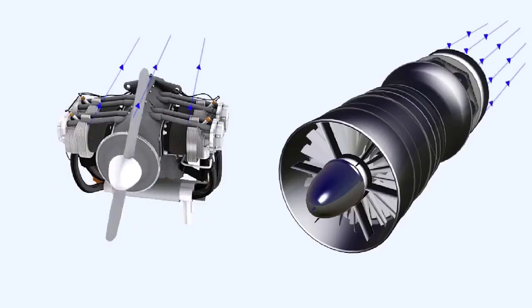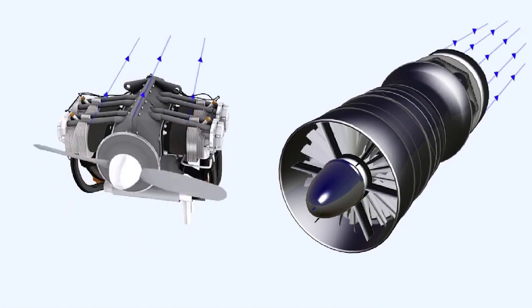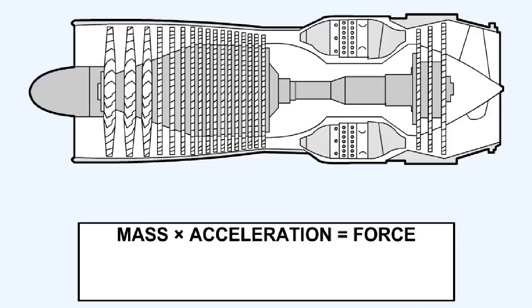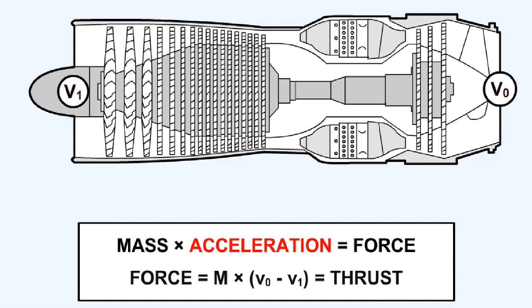The principle of the gas turbine engine is basically the same as that of the piston engine propeller combination — they both propel a mass of air backwards. Mass times acceleration equals force. In a gas turbine engine, the mass M in the equation is the air delivered by the compressor. The acceleration is the difference in the outlet velocity of the air, V0, to that of its inlet velocity, V1, due to the addition of heat energy. Force equals mass times (V0 minus V1), which equals thrust.